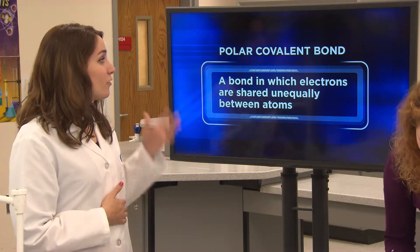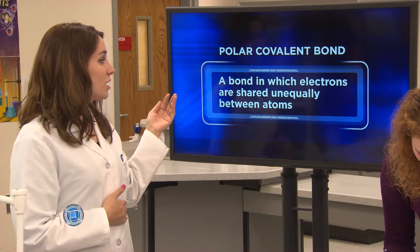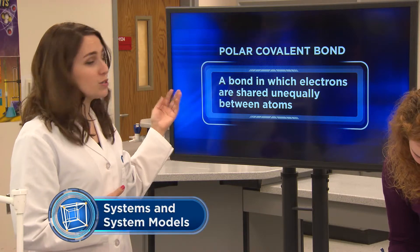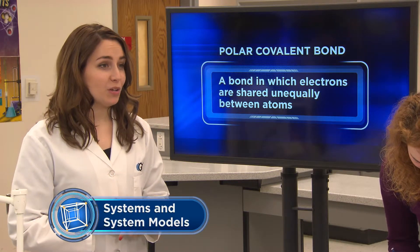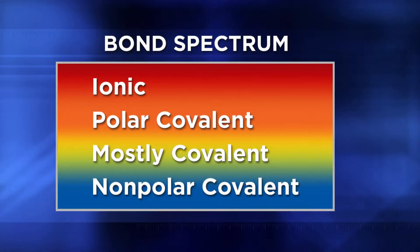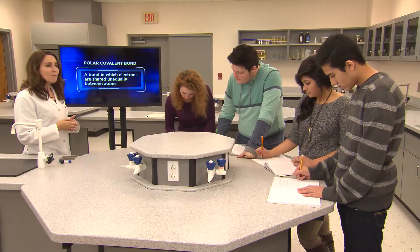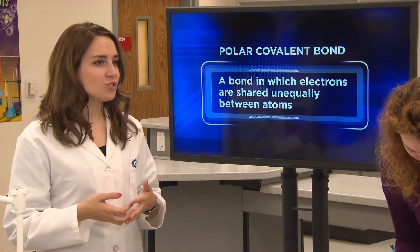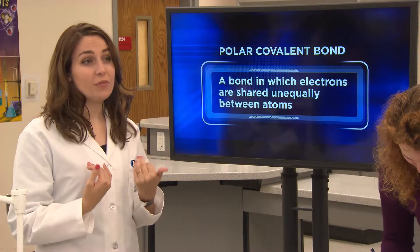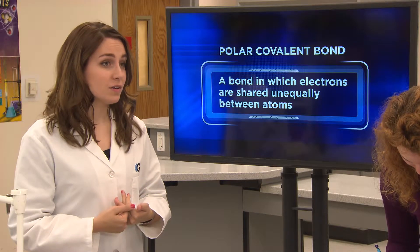A polar covalent bond is a bond in which electrons are shared unequally between atoms. The reason polar covalent bonds fall into the center of the bond spectrum, in between ionic and covalent, is because the atoms that participate in polar covalent bonding have electronegativities that are different from each other. But there just isn't a large enough difference for an electron to be completely removed from the atom with the lower electronegativity.